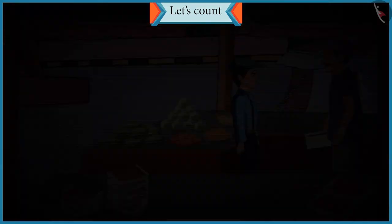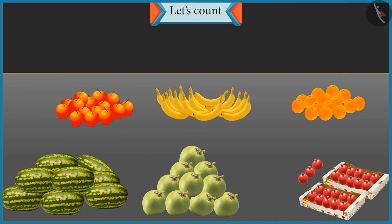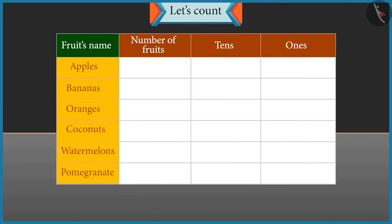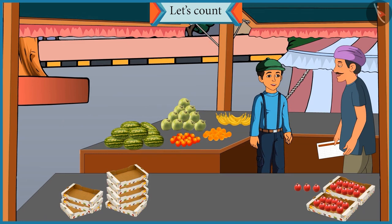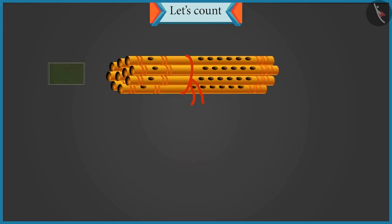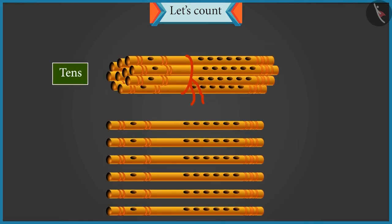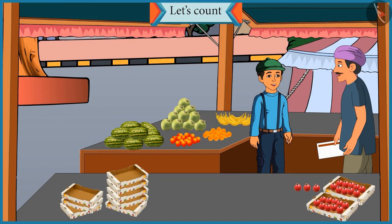Chotu, look. Different varieties of fruit are kept here. You have to count the fruits and tell their number. You also have to tell how many groups of ten are there in each, so that we can count them easily. Uncle, a group of ten means tens. In school our teacher taught us that a group of ten is called tens, and less than ten are called ones. Okay Chotu, so you count the fruits and tell me how we can show them in tens and ones.